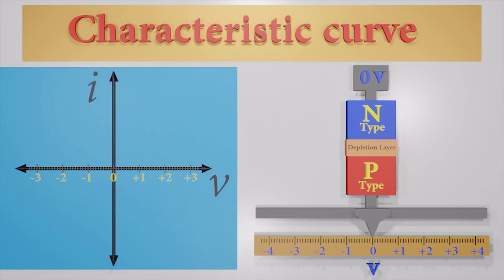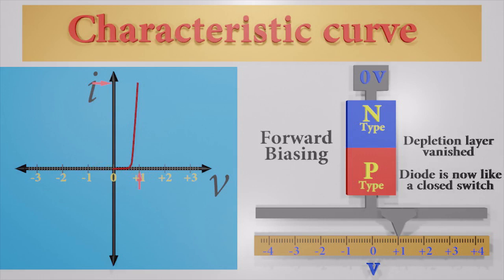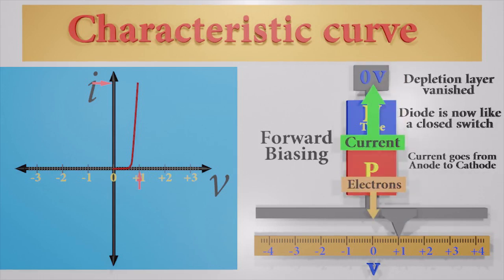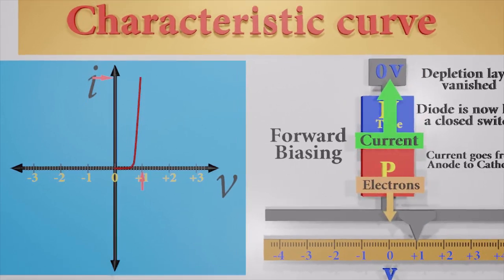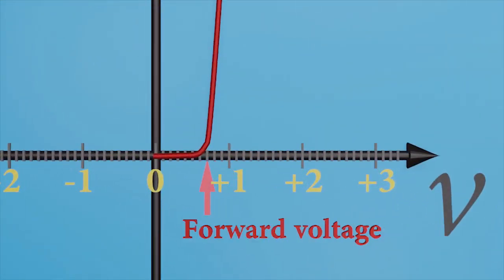If we increase the voltage of the p-end, we can see the depletion layer is becoming thinner because the diode is at forward bias. But we still can't see any current go through the diode. Let's increase the voltage further. Now a huge current can go through the diode because the depletion layer vanished. It is now like a conductor.